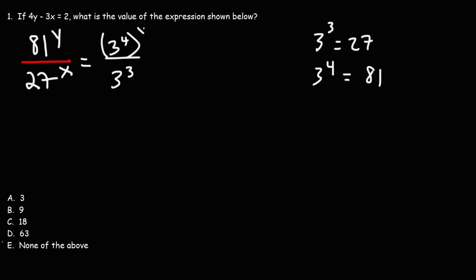Now, this is still raised to the y, and this is still raised to the x. Now, when you raise one exponent to another exponent, it's equivalent to multiplying the two exponents together. So we can multiply 4 and y to get 4y and 3 and x to get 3x. So this becomes 3 raised to the 4y over 3 raised to the 3x.